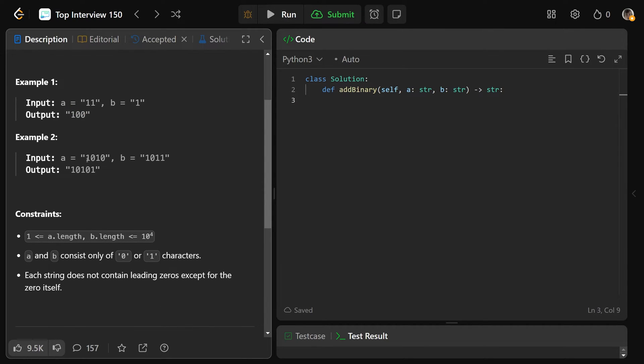With these numbers here, we have 1010, which would be 10 in binary. We have 1011, which is 11 in binary. So we should be getting 21. Here we get 16 plus 4 plus 1. And so this is the binary string for 21.